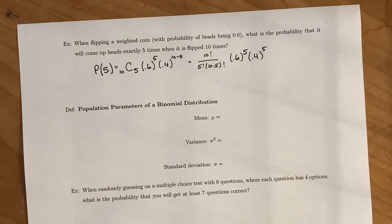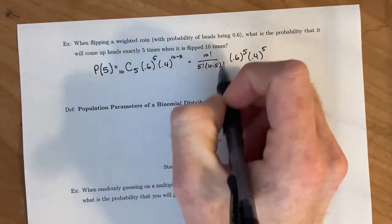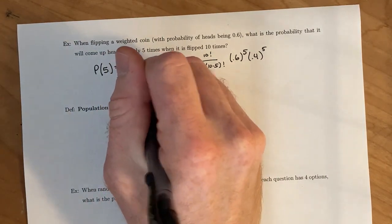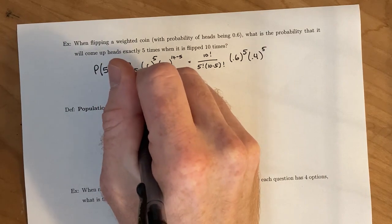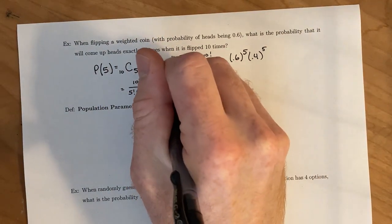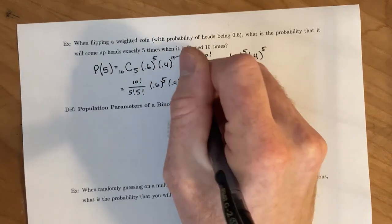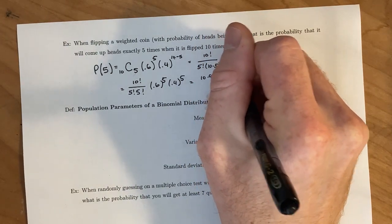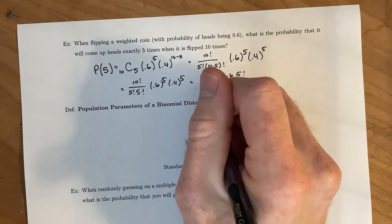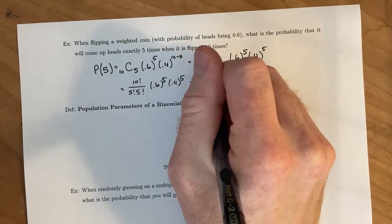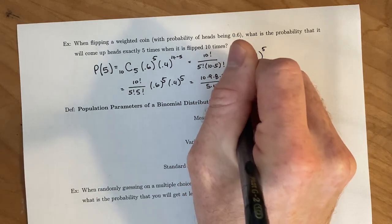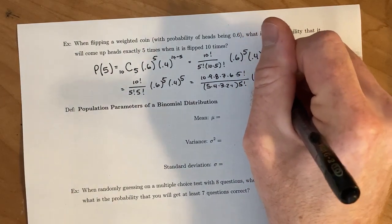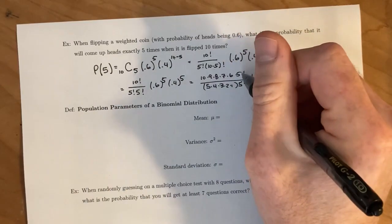And so either you can throw this into your calculator to get a number. We could also play around with these factorials to make it a little bit simpler to deal with. We're first going to do the parenthesis. And then we're going to expand out the 10 factorial until we get to a 5 factorial, because that's the largest factorial in the denominator. And we have 5 times 4 times 3 times 2 times 1. So this is a 5 factorial. That's a 5 factorial. It's 0.6 to the 5th, 0.4 to the 5th. And if we cancel those out,